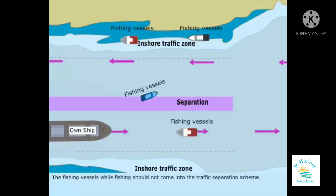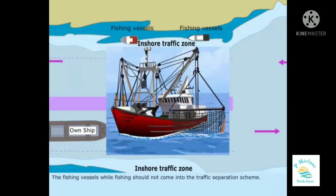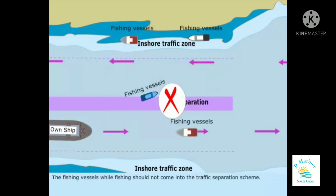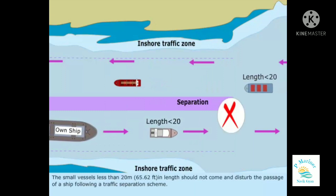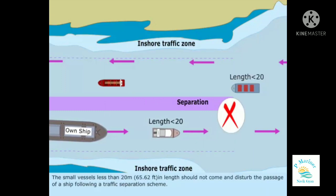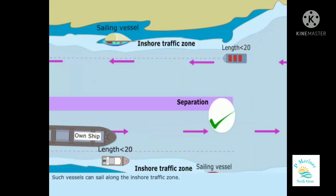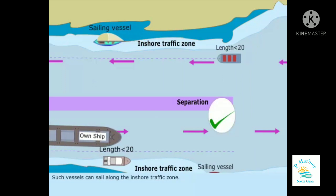Fishing vessels, while fishing, should not come into the traffic separation scheme. Small vessels less than 20 meters or 65.62 feet in length should not come and disturb the passage of a ship following a traffic separation scheme. Such vessels can sail along the inshore traffic zone.